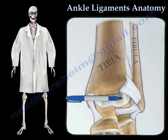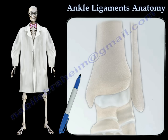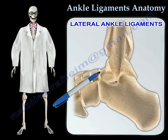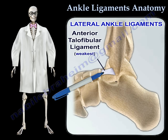There are three lateral ligaments of the ankle joint. The anterior talofibular ligament is the weakest of the lateral ankle ligaments. Its origin is 10 millimeters proximal to the tip of the fibula, and it extends from the anterior inferior border of the fibula to the neck of the talus.